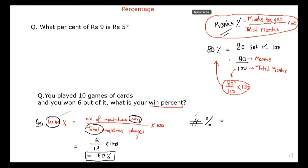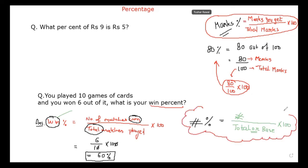So whatever percentage I want should come on the top, and in the denominator what should come? Total. There is also one more thing that can come — I will explain it in the next question. So the formula is: hash percentage equals to hash upon total, or base. Is it clear? Yes sir. Have you copied everything on the screen? Yes sir.